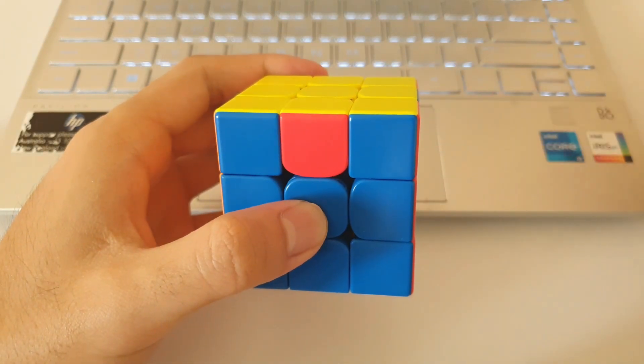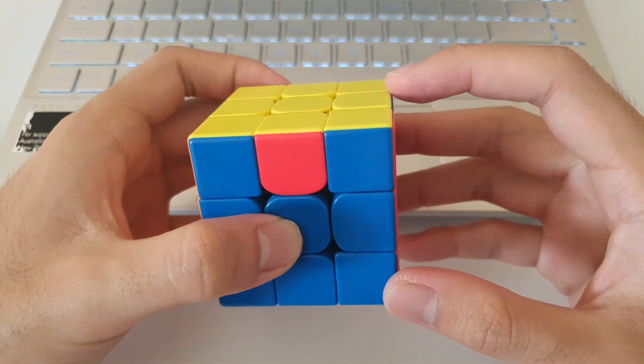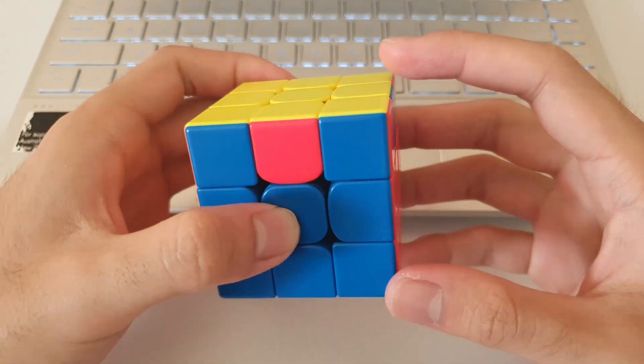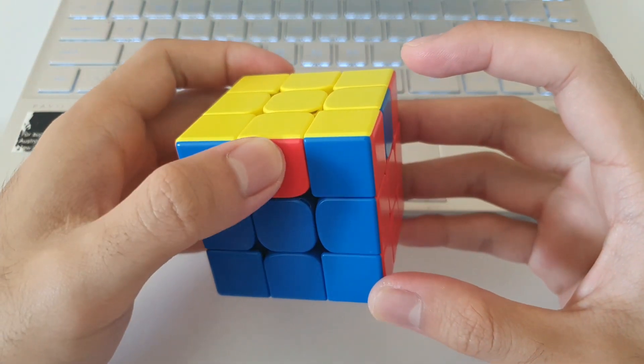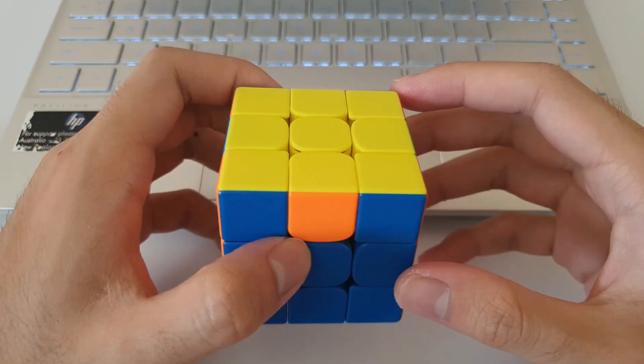The orientation that you hold the cube when you start the algorithm depends on which algorithm you use. With the M prime algorithm, the one that starts with an M prime, you want to hold one of the edges towards you and the other edge towards the right hand side.